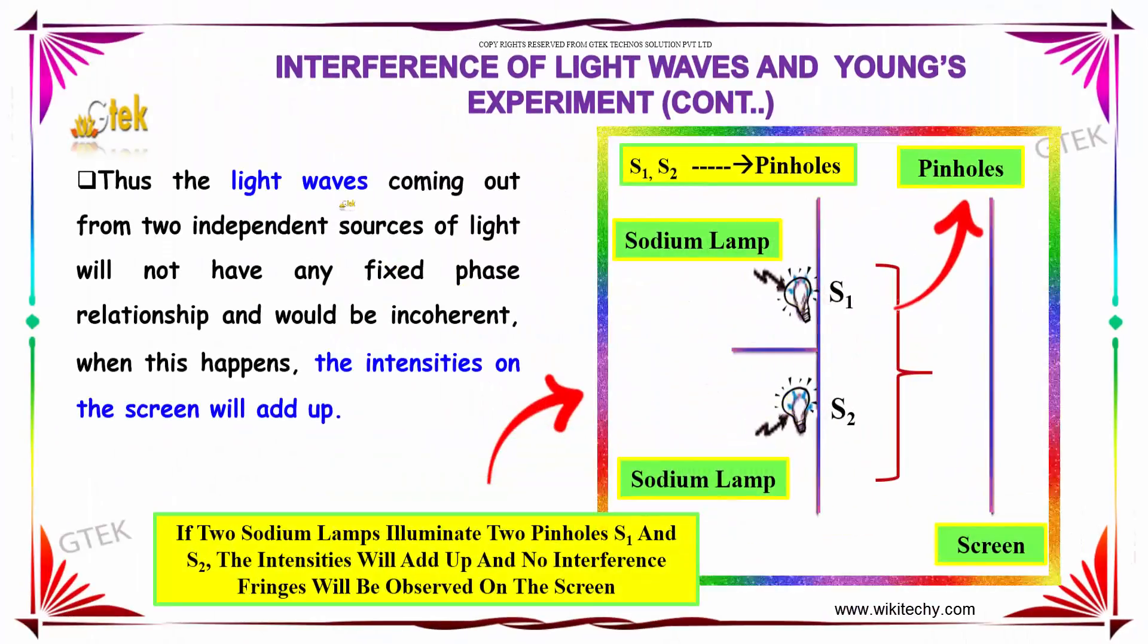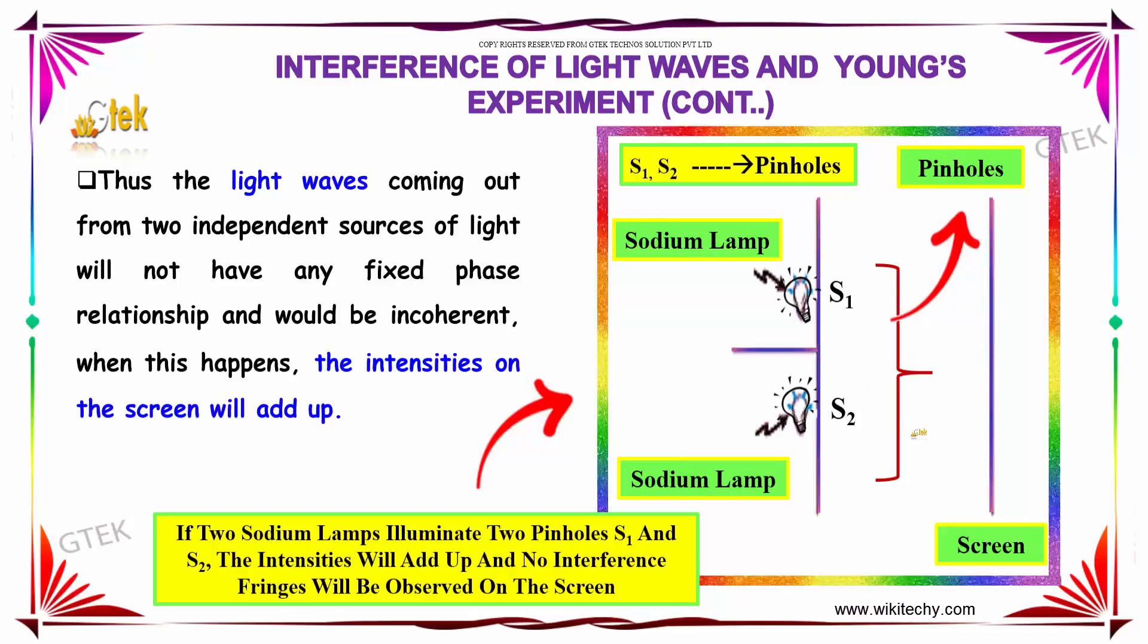Thus, the light waves coming out from two independent sources of light will not have any fixed phase relationship and would be incoherent. When this happens, the intensity on the screen will add up.